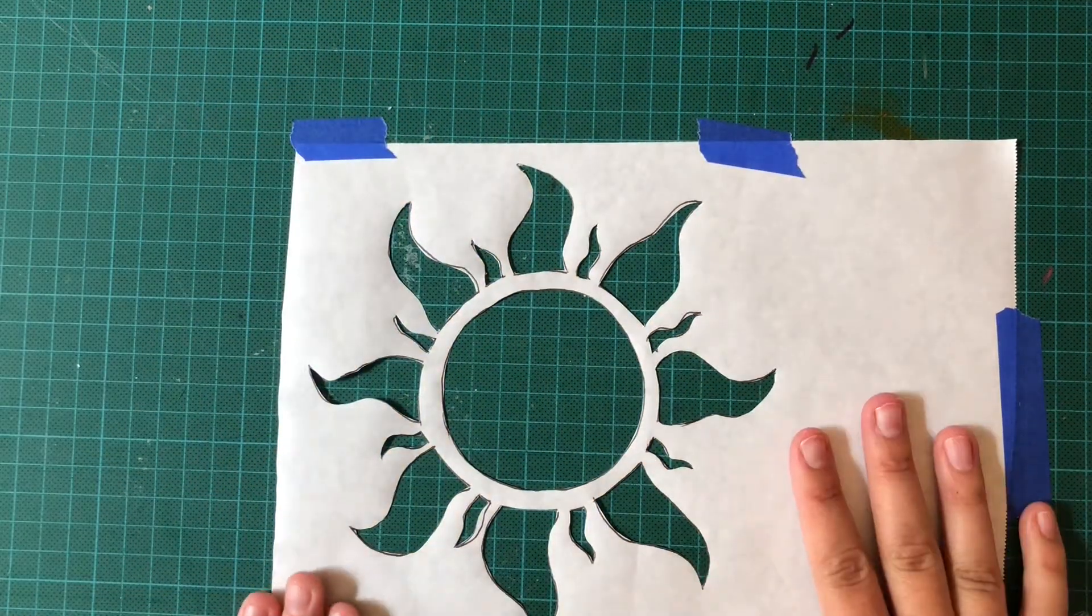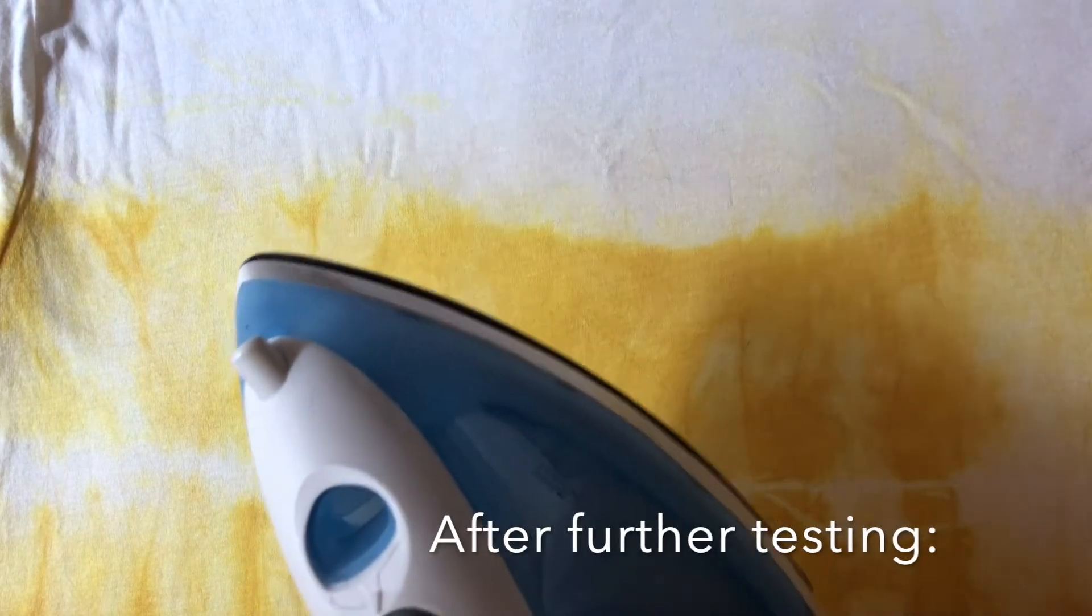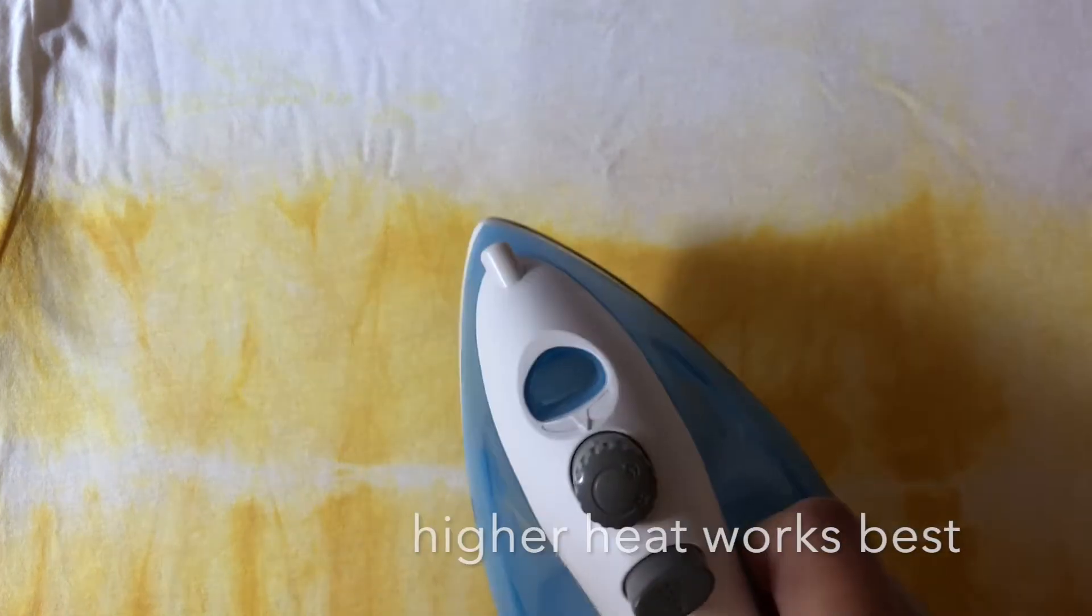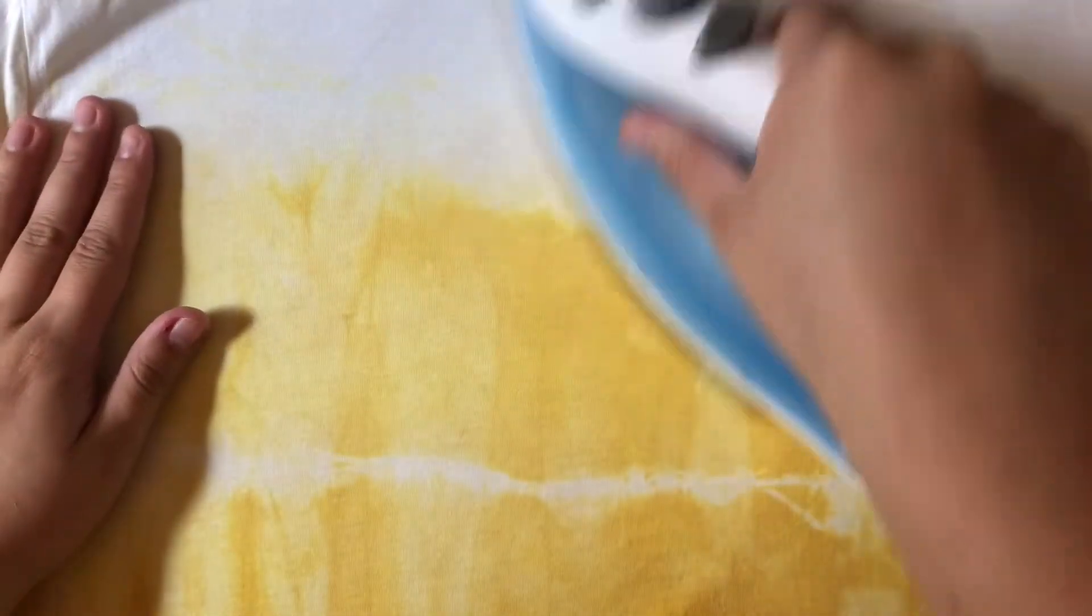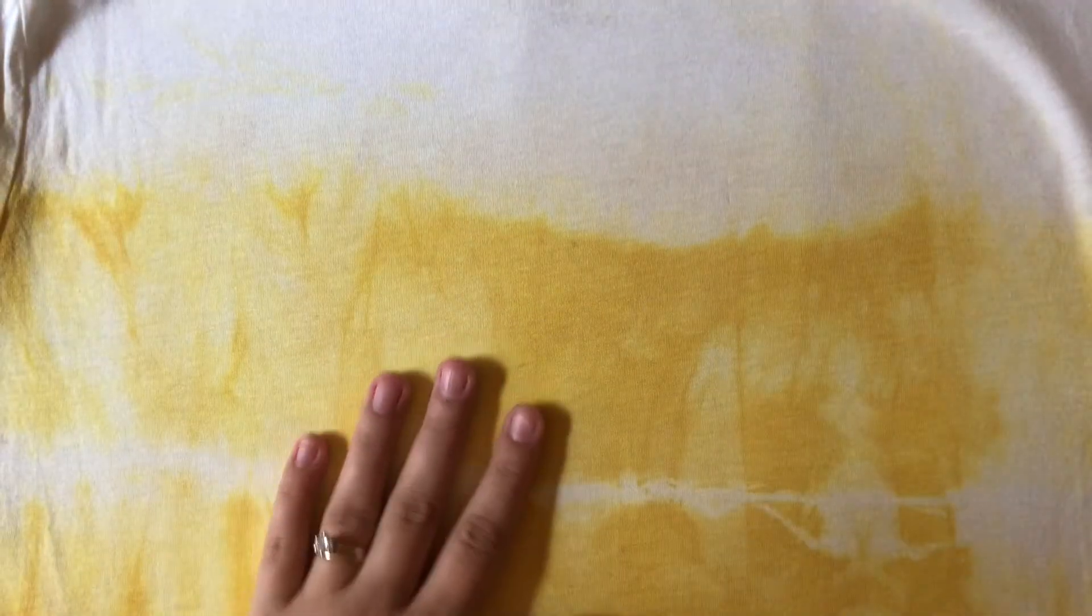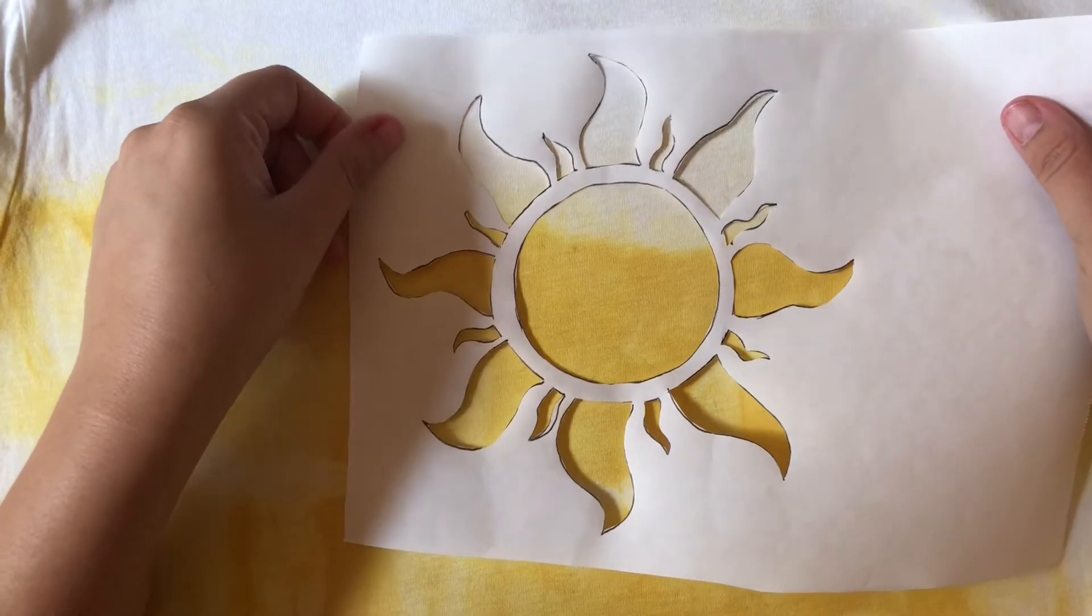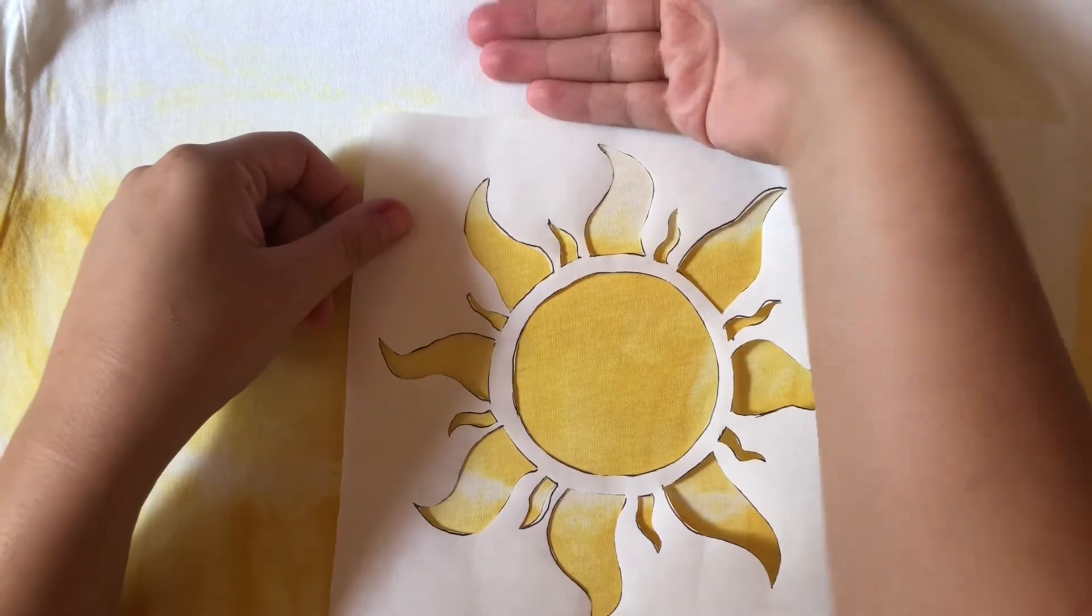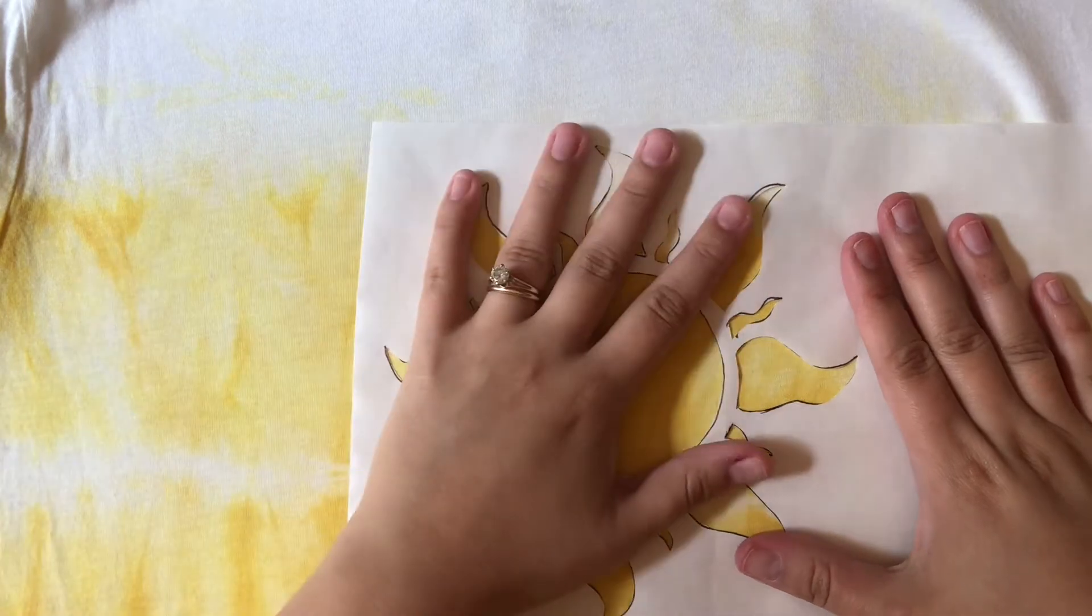All right, once we have our negative design we're ready to transfer it onto our t-shirt. I've got my iron on a kind of medium heat setting—mine says rayon wool. I'm going to give it a quick pass and then I'm going to line up my design where I want it. I said four fingers from the top. There it goes, looks good to me.